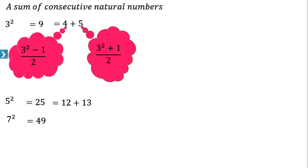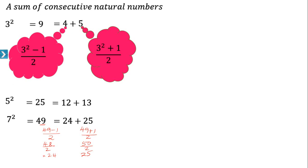Now 7² is equal to 49. How do we express 49 as the sum of two consecutive natural numbers? We calculate (49 − 1) / 2, that is 48 / 2 = 24, and (49 + 1) / 2, that is 50 / 2 = 25. So the two consecutive natural numbers are 24 and 25, and 49 equals 24 plus 25.